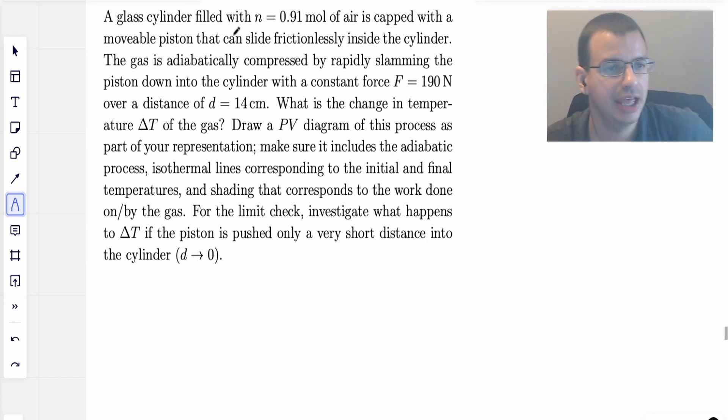A glass cylinder filled with 0.91 moles of air is capped with a movable piston that can slide frictionlessly up and down the cylinder. The gas is adiabatically compressed, meaning Q equals zero, by rapidly slamming the force down with a constant force over a distance of 14 centimeters, which is the same as 0.14 meters. What is the change in temperature delta T of the gas?